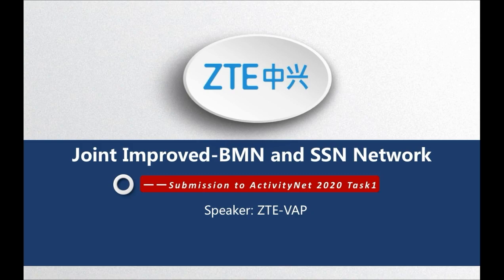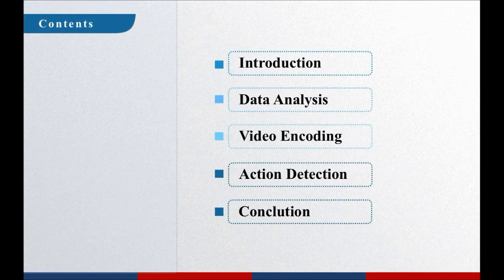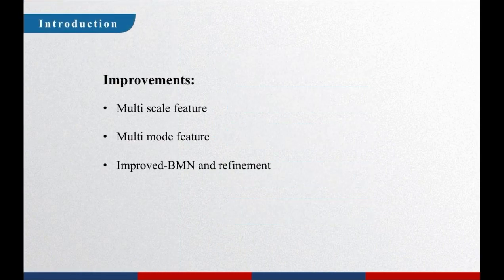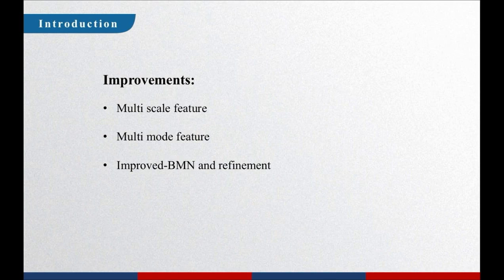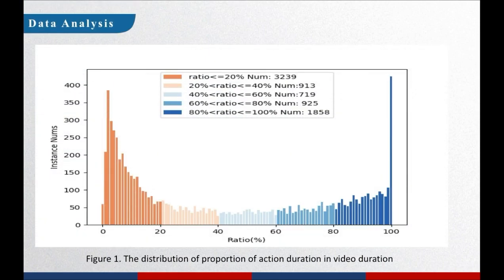Hello everyone. Thanks for giving us the opportunity to present our team's work about ActivityNet 2020 Task 1, Temporal Action Localization. It's quite a challenging task because of activity complexity, action duration variability, and background cluttering. In our method, we mainly adopted three aspects of optimization: first, we used a multi-scale feature to solve the problem of uneven motion distribution; second, we adopted multiple video encoding methods including TSN, I3D, and SlowFast to extract multiple pattern features; finally, we adopted an improved BMN with a receptive field block, and used an SSN model to refine the temporal boundary and confidence score. We also rank the confidence score with the classification results.